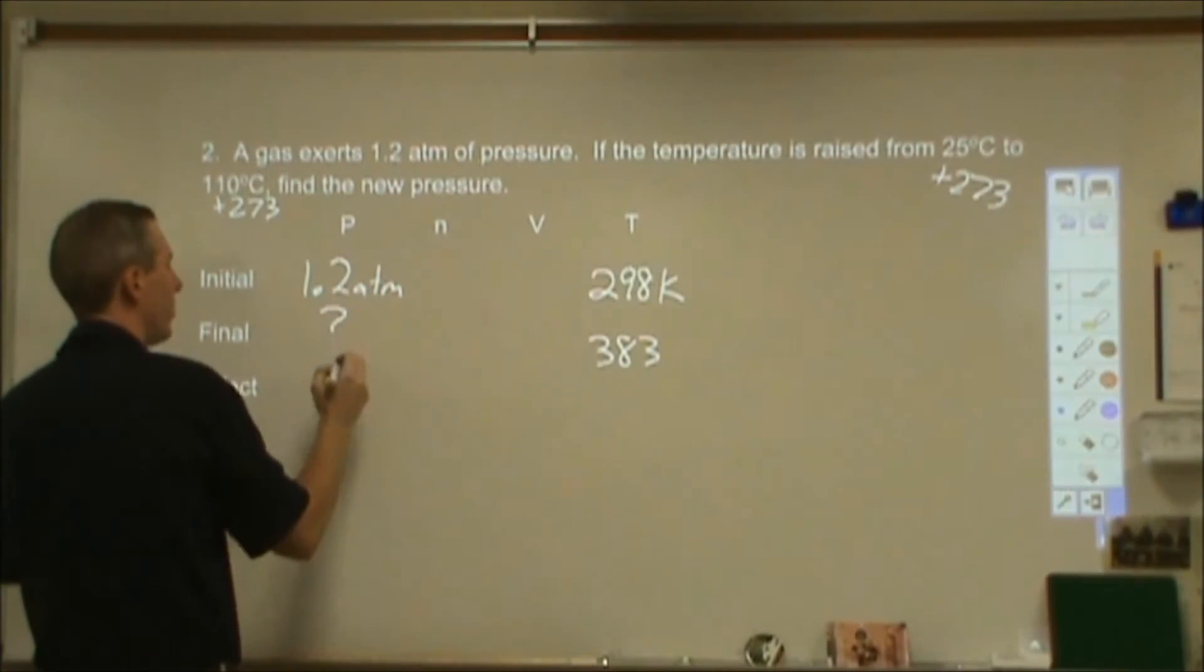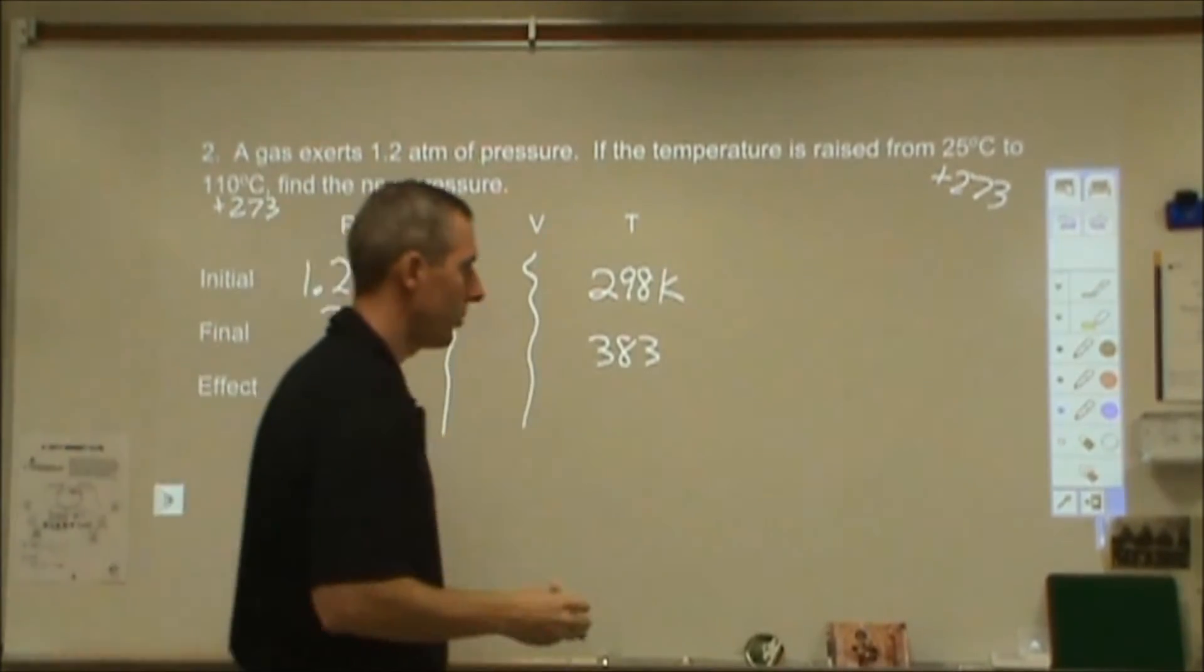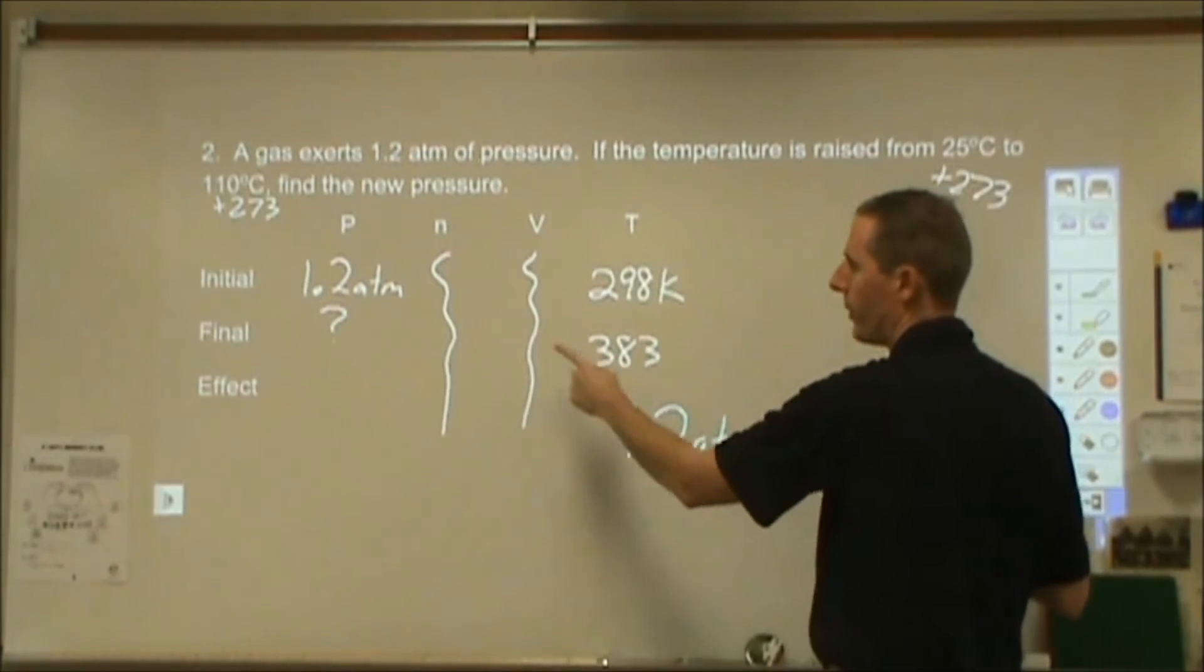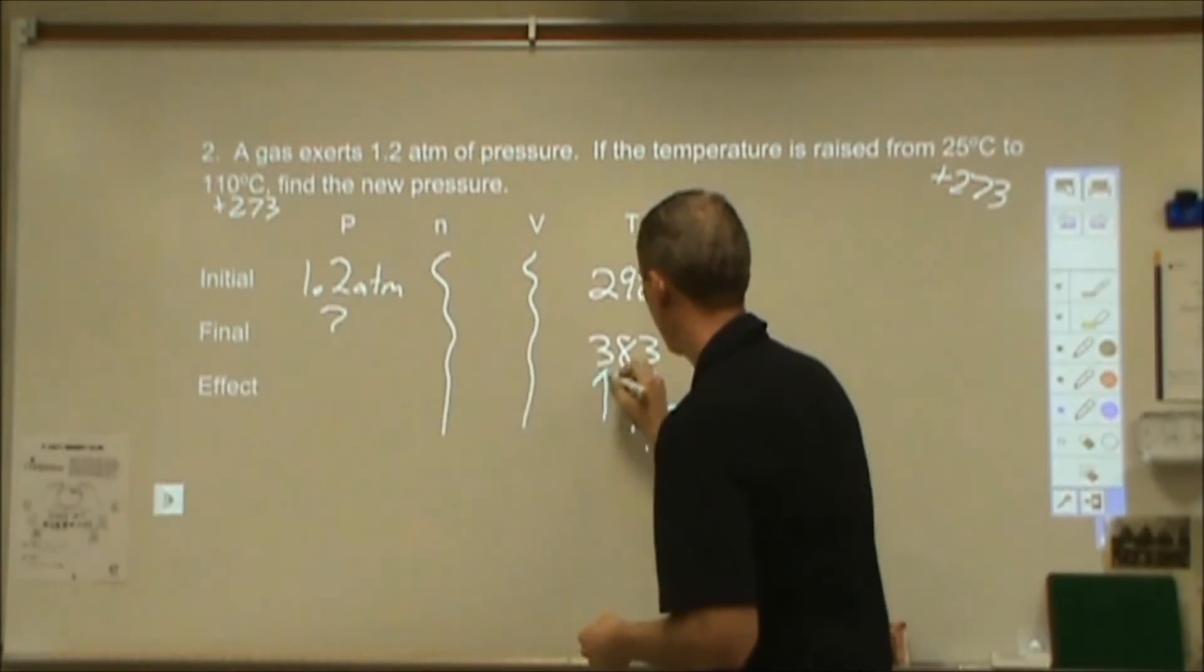I want to know what my final pressure is. Nothing about amount, nothing about volume. I'm going to ignore those. So then I'm going to go through and say, okay, I have 1.2 atmospheres to start. I'm going to write that down. And then I say, will increasing the temperature make my pressure go up or down? Okay. Increasing the temperature, they're going faster, there's bigger collisions, there's more collisions. The effect is this is going to make my pressure increase.